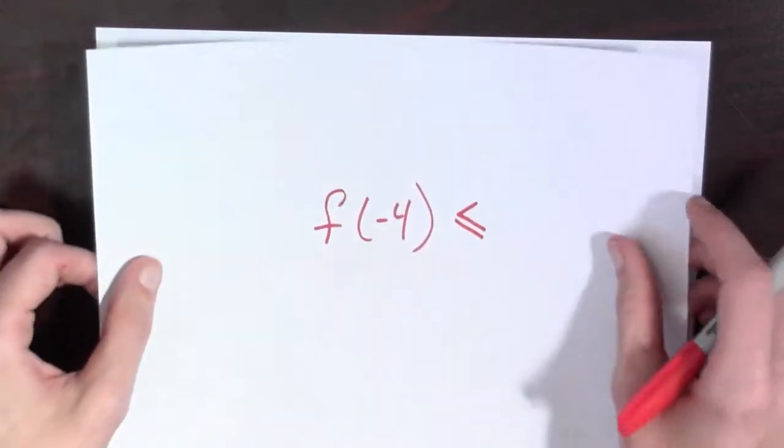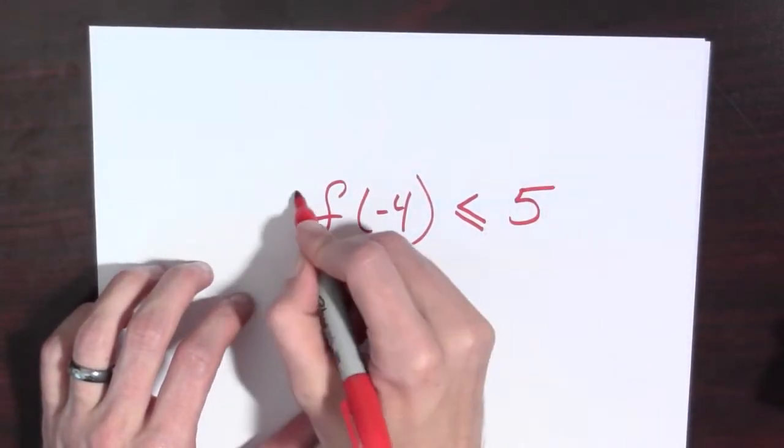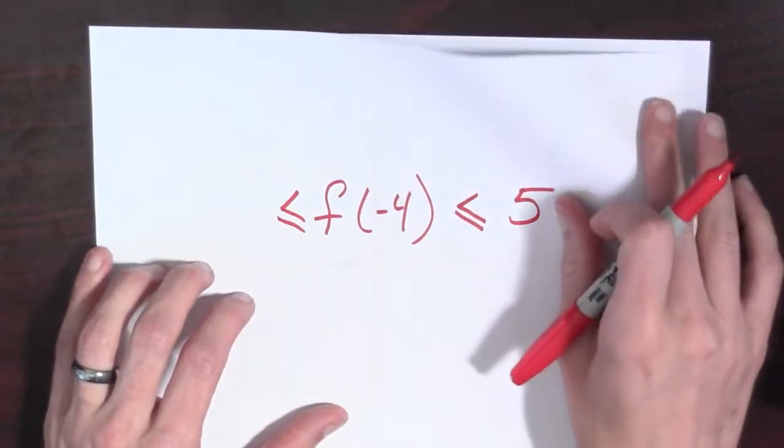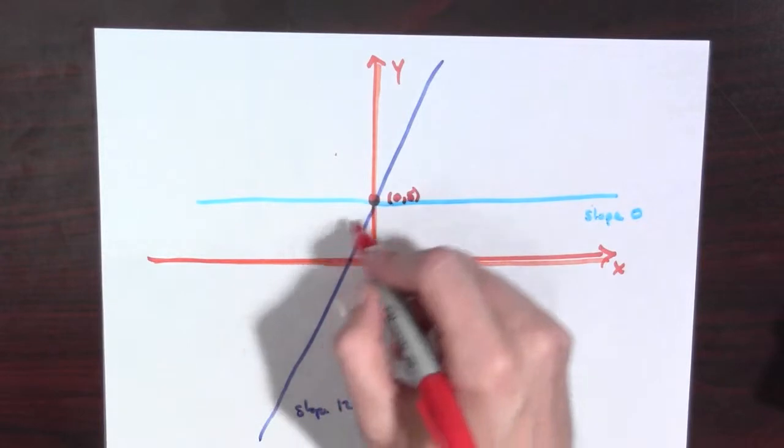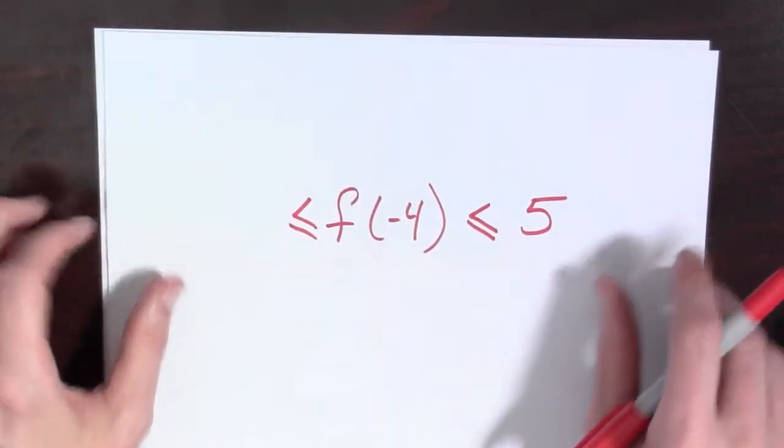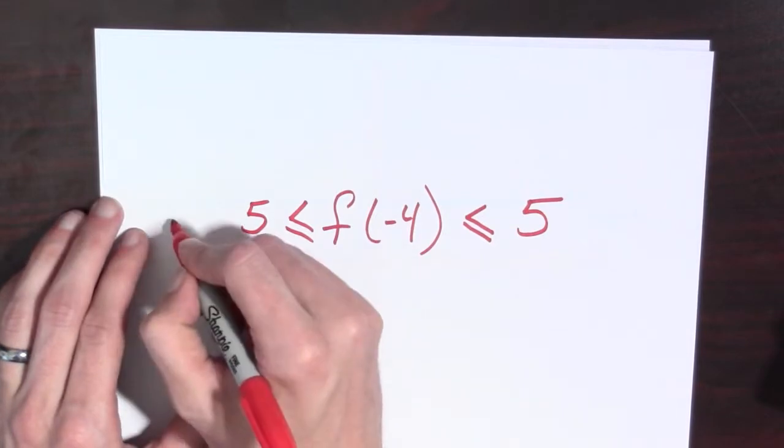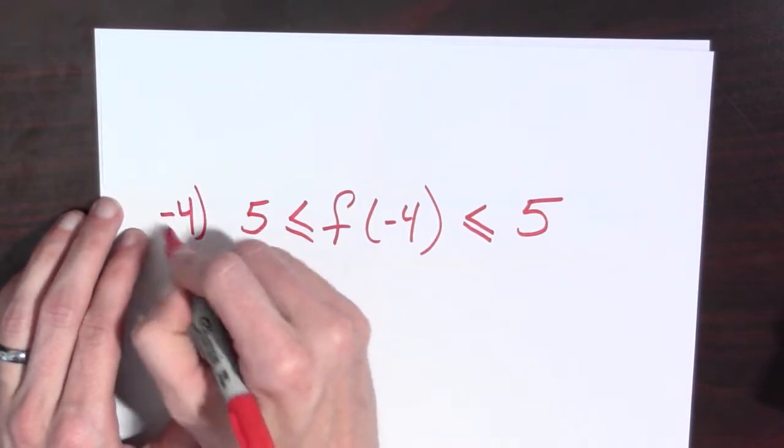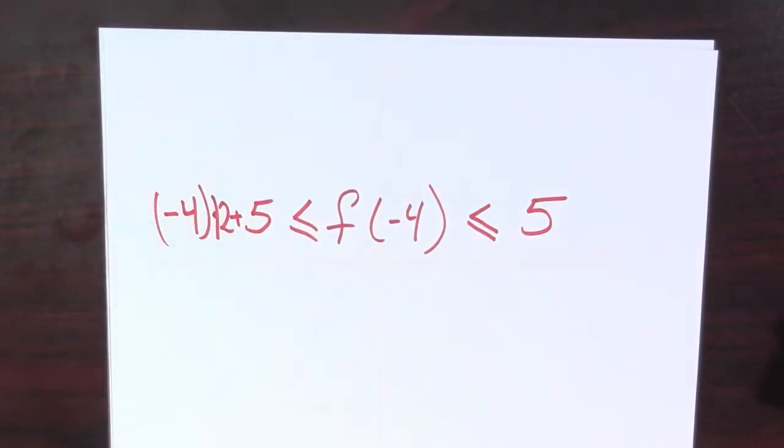So the most it could have grown, the highest value it could have is 5. And how small could it be? Well, f of negative 4 is down here someplace. So what we do is we're going to take 5, and we should do negative 4 times 12 plus 5. Negative 4 times 12 plus 5. This is what we know about f of negative 4.